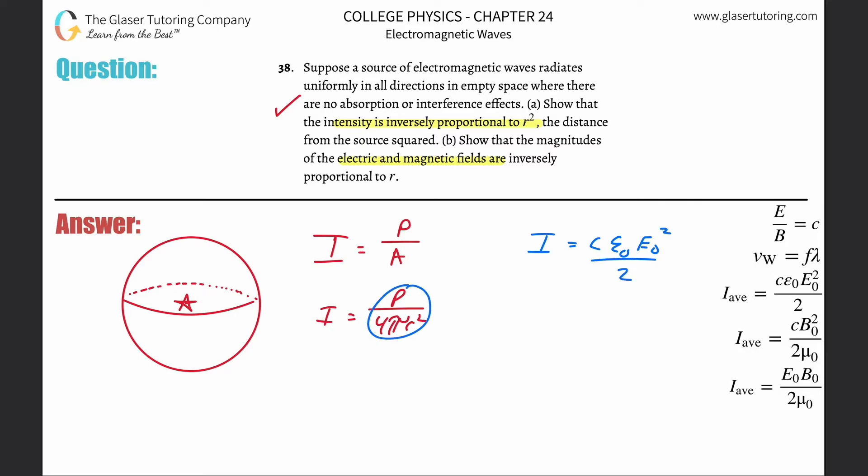What I'm going to do now is take this value and plug it in for I. So in other words, that means now we got P over 4πr² is going to be equal to c ε₀ E₀² all over two.